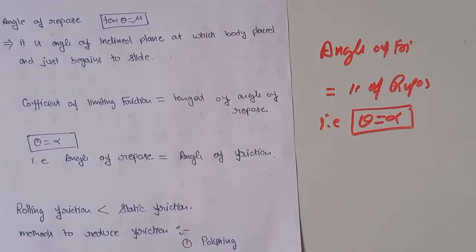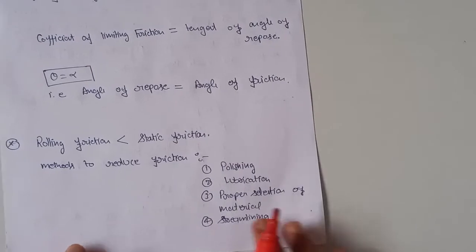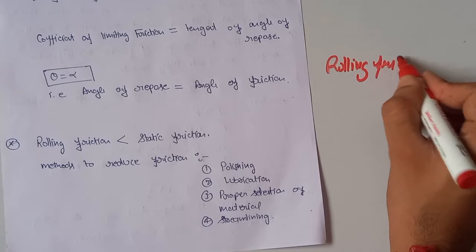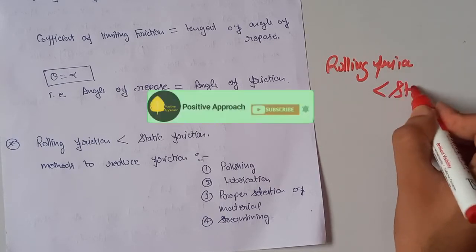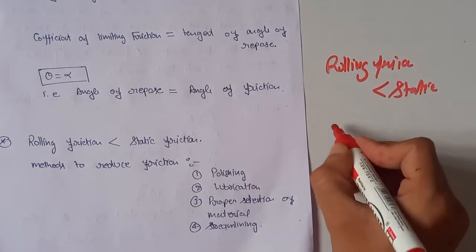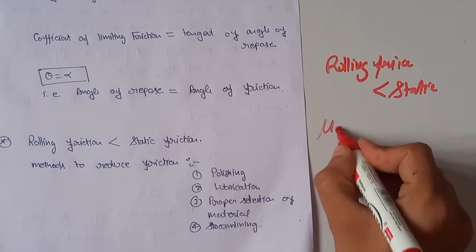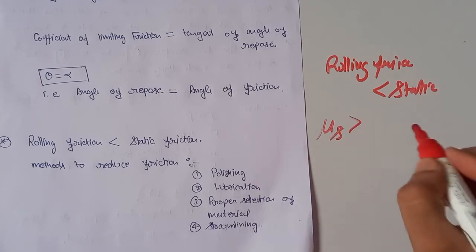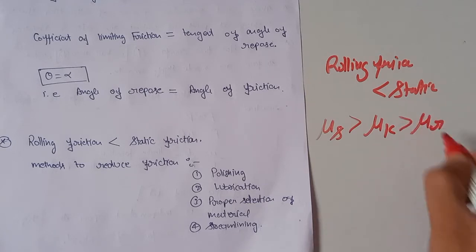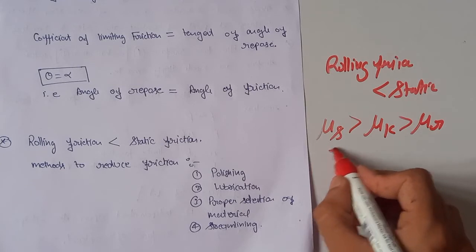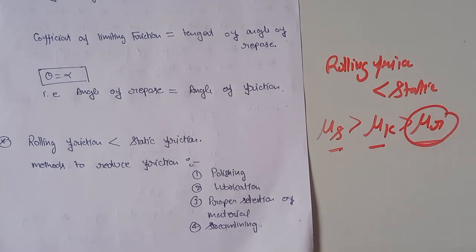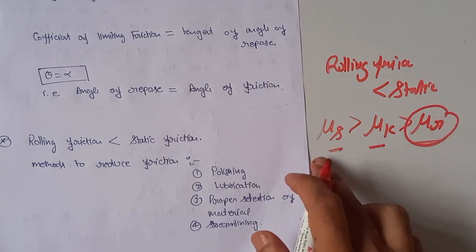Our next key point: rolling friction. Rolling friction is less than sliding friction. Also, the coefficient of static friction is greater than the coefficient of kinematic friction, which is greater than the coefficient of rolling friction. So: static > kinetic > rolling friction.